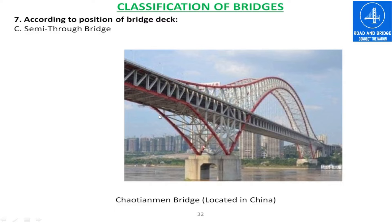According to the position of the flood level, the bridge can be classified into two categories: submersible bridge and high-level bridge. If the flood level is up to the soffit of the deck, it is called a submersible bridge — it may touch or even go above the soffit of the deck. In case of a high-level bridge, the flood level will be below the soffit of the deck.